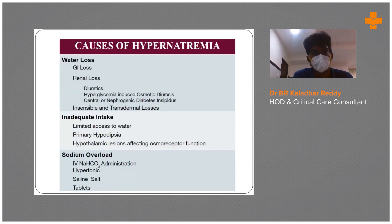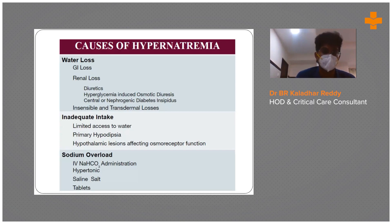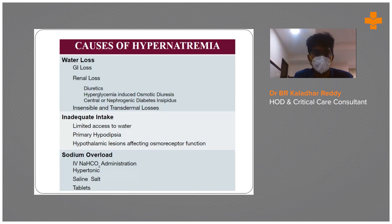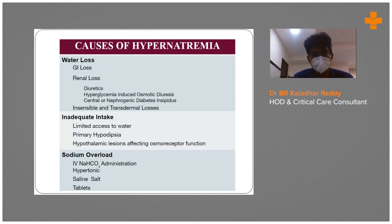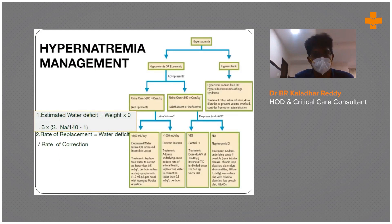A brief overview of hypernatremia: most cases are due to water loss — GI or renal loss from diuretics, central or nephrogenic diabetes insipidus, or insensible and transdermal losses. Other causes include inadequate intake, such as in bedridden or debilitated patients, primary hypodipsia, or hypothalamic lesions affecting the osmoreceptor center. Iatrogenic causes include overcorrection with sodium bicarbonate, hypertonic saline, or vasopressin tablets.